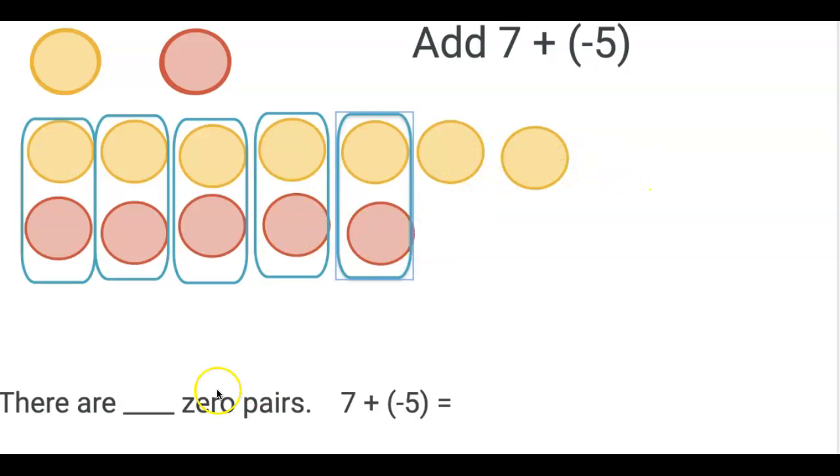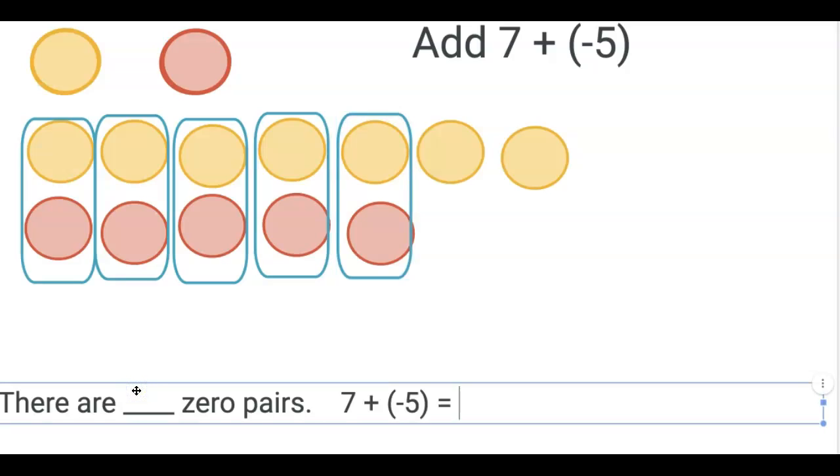They're left with two positives. So there are five zero pairs, and 7 + (-5) = 2.